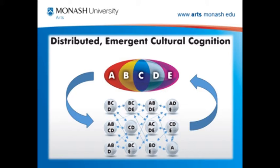This is another sketch of distributed emergent cultural cognition, showing that interactions between individual units at the local level — where we have heterogeneous distributions — can lead to the emergence of the macro level of cultural cognition. But this cultural cognition also feeds back into the interactions of individual members. So it's a kind of double-way cause and effect.